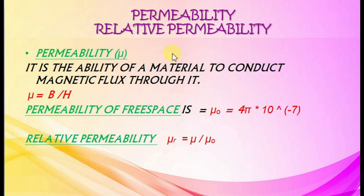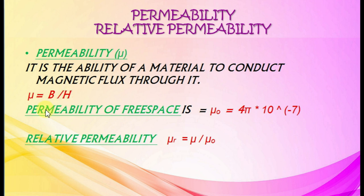Permeability and relative permeability. Permeability (μ) is the ability of a material to conduct magnetic flux through it. μ equals B by H. Permeability of free space equals μ₀ equals 4π into 10 raised to minus 7. Relative permeability μᵣ equals μ by μ₀.